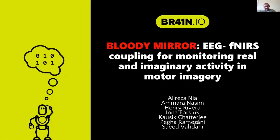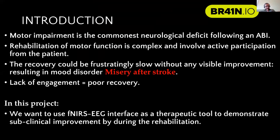Our project is called Bloody Mirror — the 'blood' comes from fNIRS and the 'mirror' from motor imagery. To start, motor impairment is the commonest neurological deficit following an acquired brain injury, whether that's a stroke — the commonest acquired brain injury — a traumatic head injury, or other diseases.